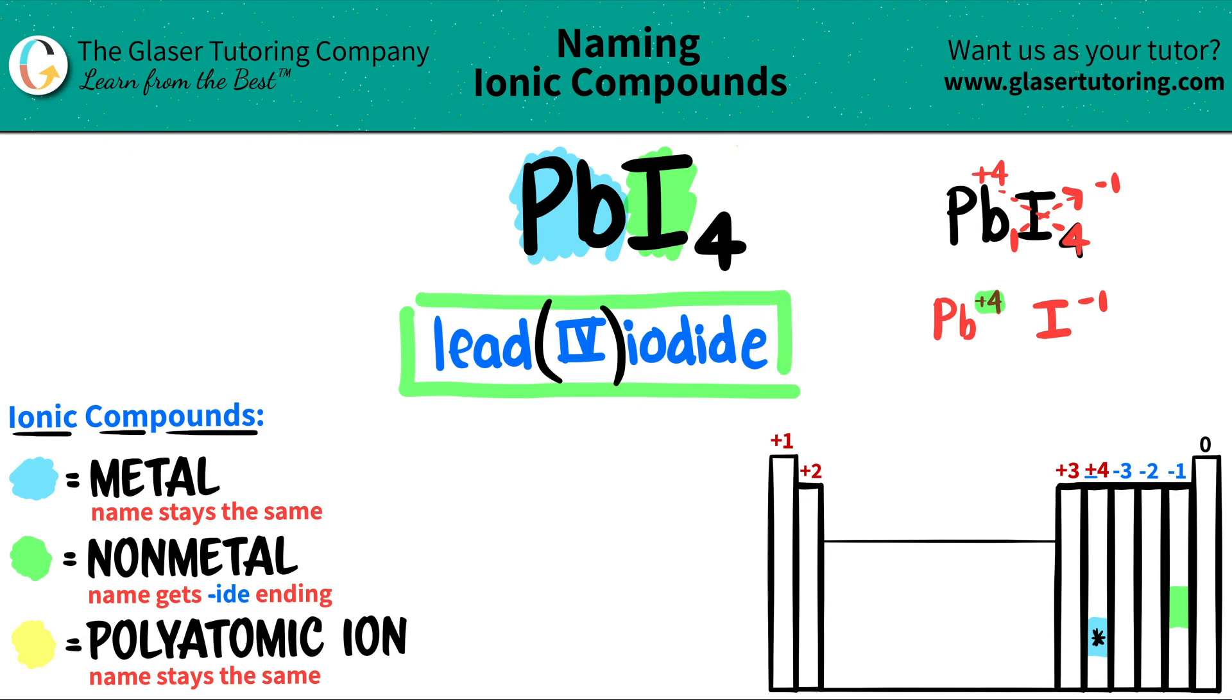So PbI4 is lead four iodide. And that's it.